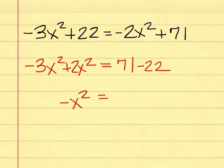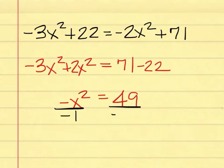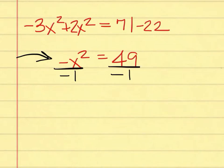On the right-hand side, 71 minus 22 is going to simplify to what, Deerfield? 49 is right. What must I now do to both sides, Bailey? We will go to the next one — Perry, what do I have to do to both sides? He'll pass. What do I do to both sides, Salyers? Not the square root. What do we do to both sides, Johnson? You divide both sides by negative 1. Yes, you divide both sides by the negative 1 that is present next to the x squared.